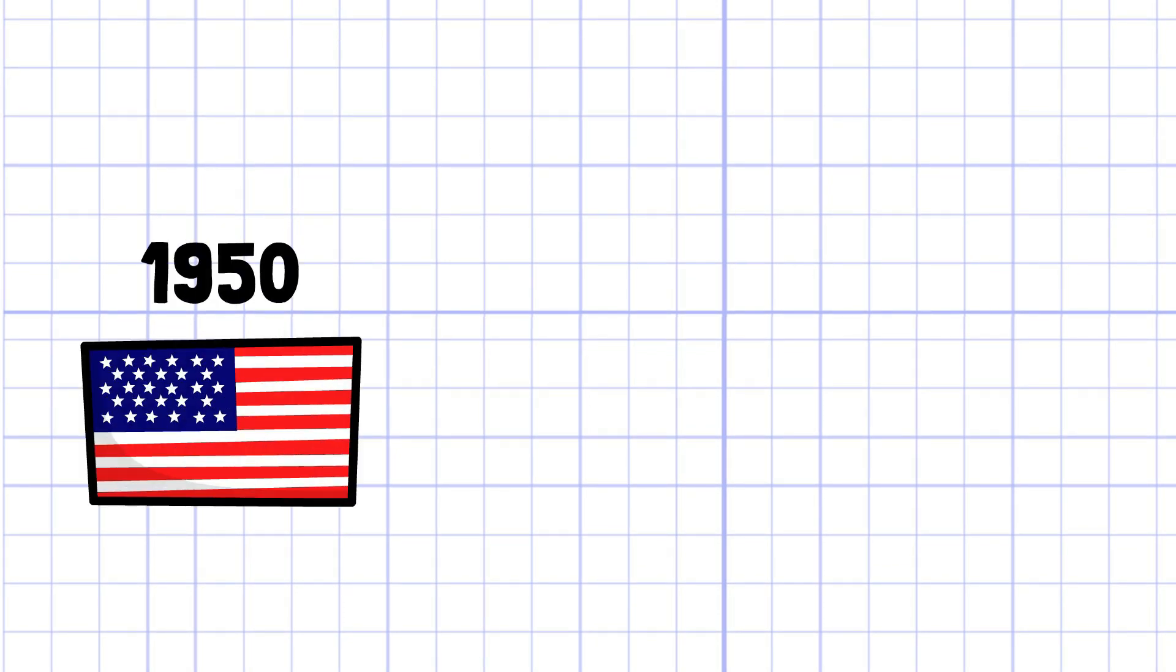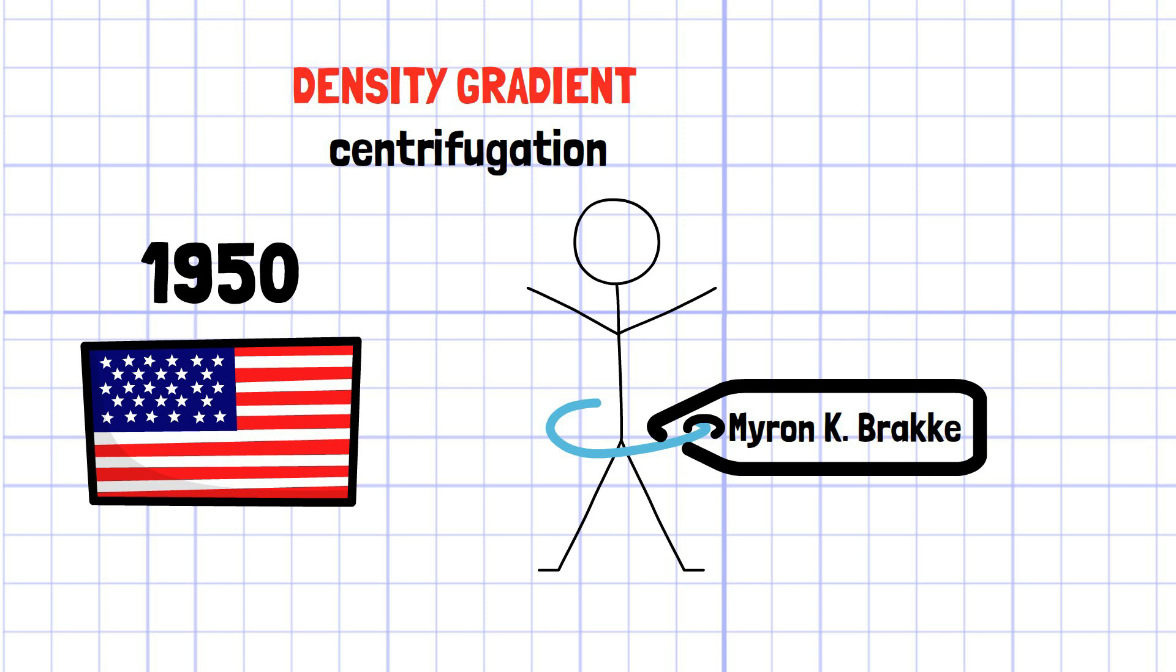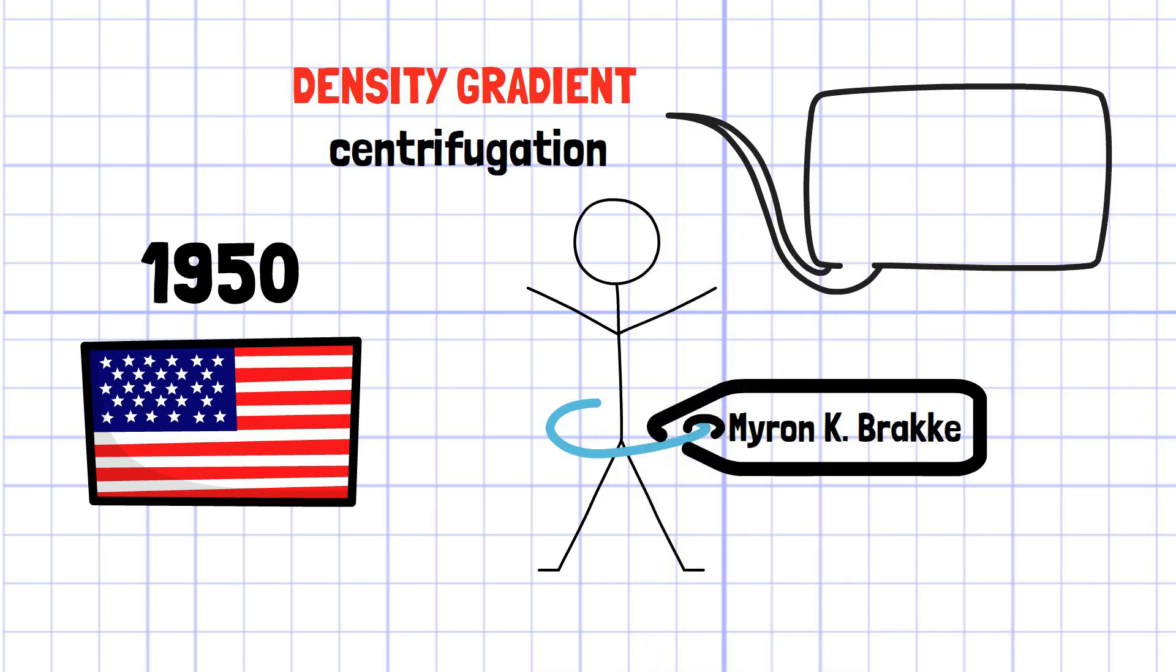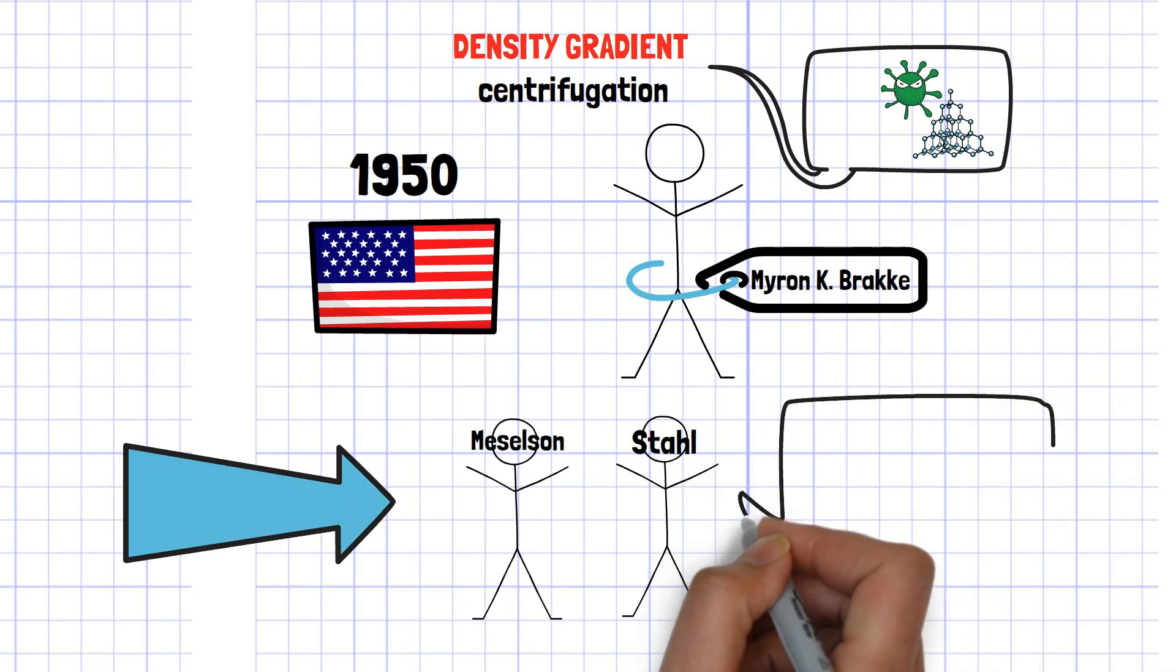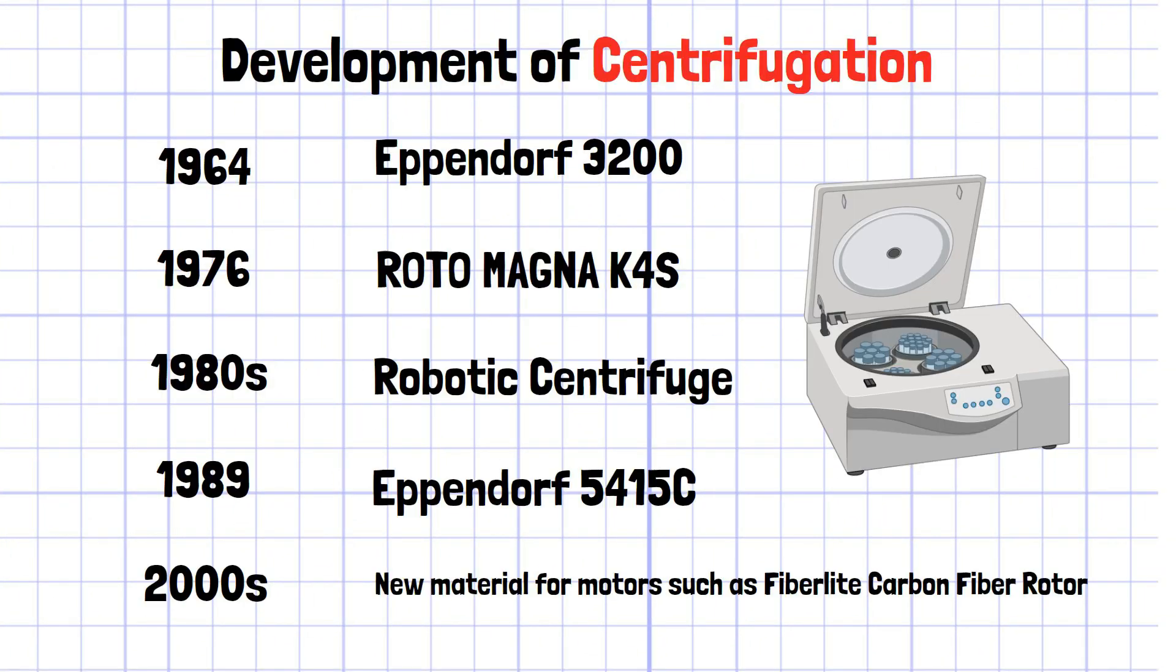In 1950, the American biochemist Myron Brakke used density gradient centrifugation as a separation technique to purify potato yellow dwarf virus. Since that time, this technique has developed into widely used tools for the purification of macromolecules, viruses, and organelles. Meselson and Stahl applied a developed version of density gradient centrifugation called cesium chloride gradient centrifugation to their experiment. The subsequent development is listed briefly as follows.